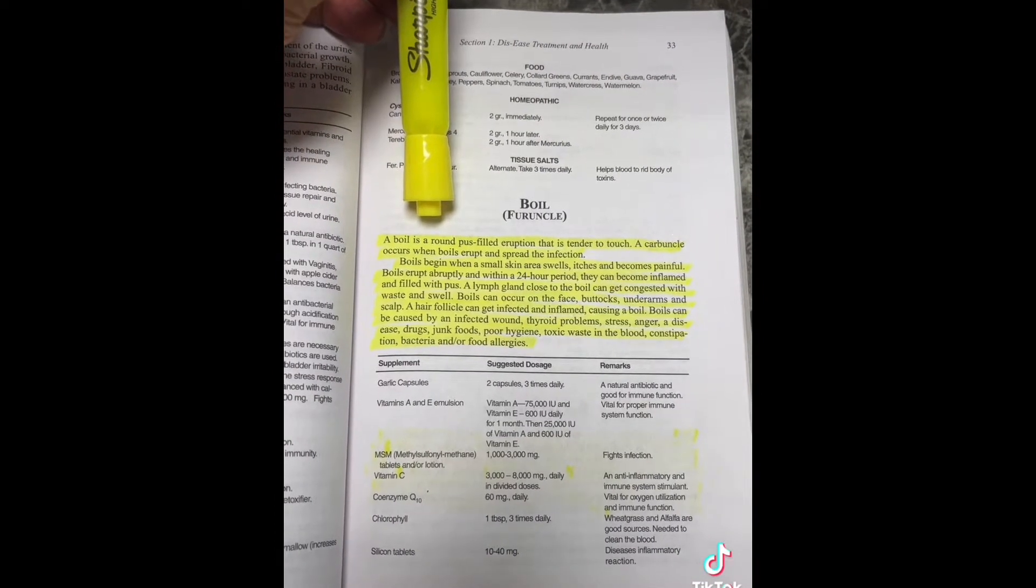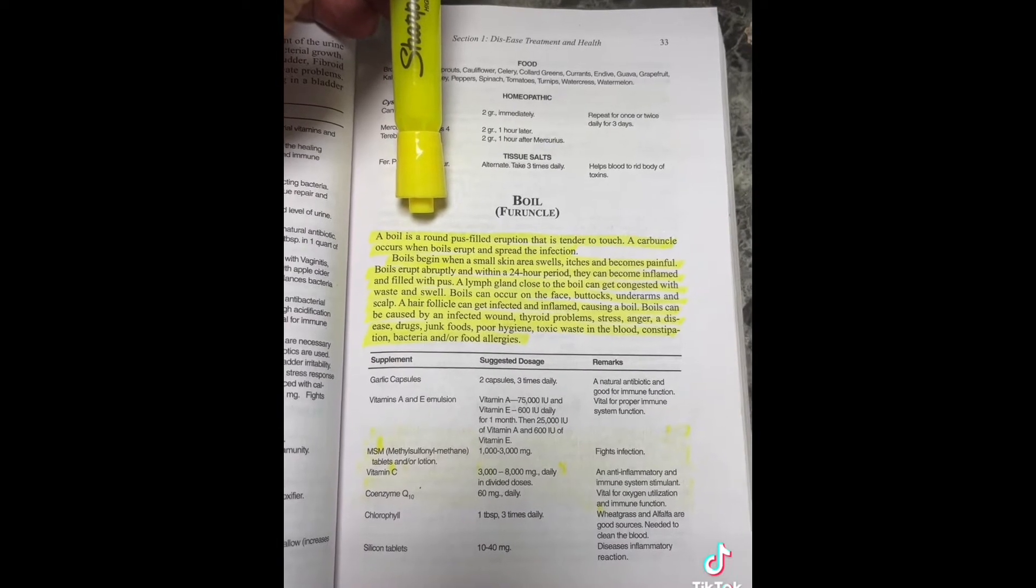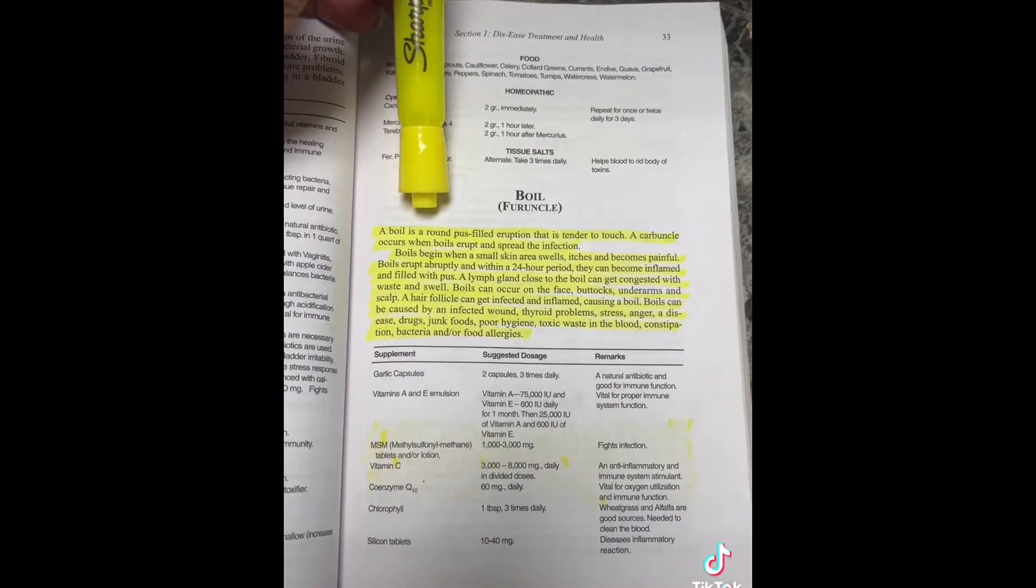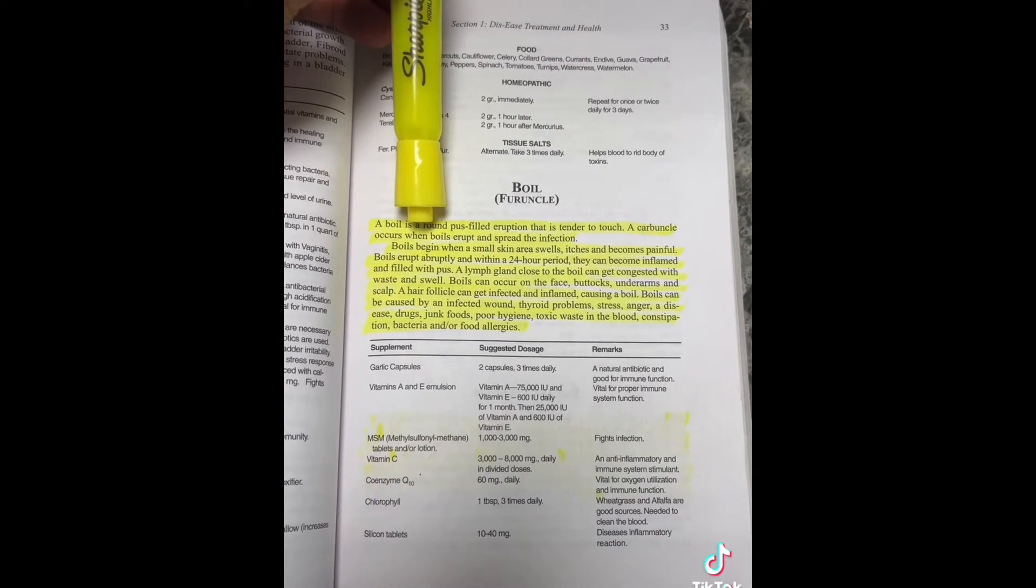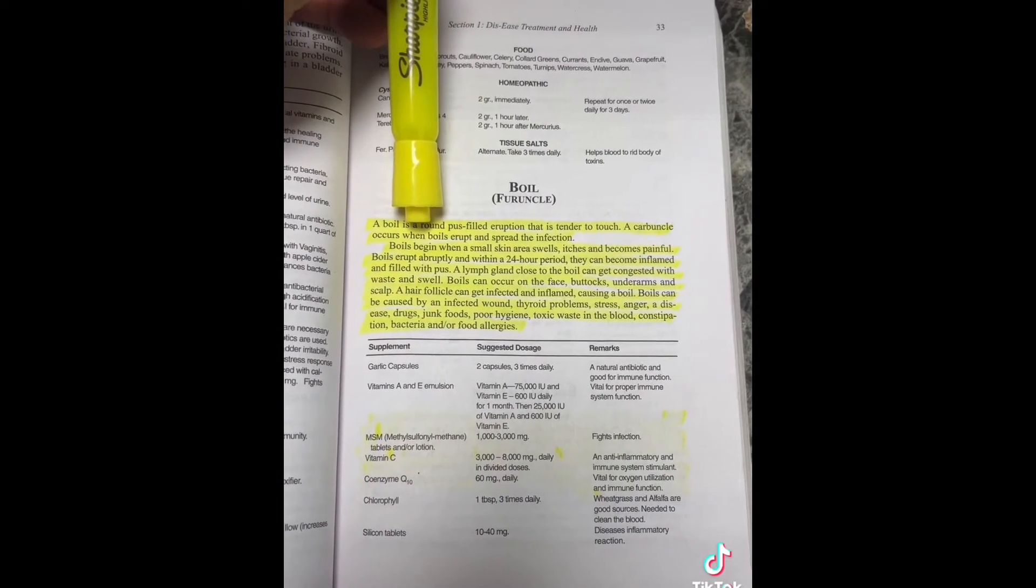A boil is a round pus-filled eruption that is tender to touch. A carbuncle occurs when boils erupt and spread the infection. Boils begin when a small skin area swells, itches, and becomes painful.